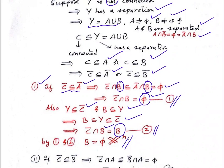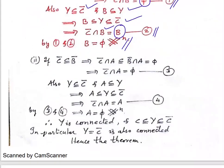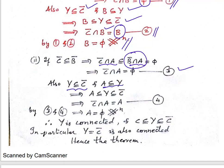Similarly, for Case 2: if C-bar is contained in B-bar, we take the intersection with A on both sides and get B-bar ∩ A = ∅, so C-bar ∩ A = ∅ — call this equation (3). On the same lines, A ⊆ Y ⊆ C-bar, so C-bar ∩ A = A — call this equation (4). Comparing (3) and (4), we get A = ∅, a contradiction since A is non-empty.